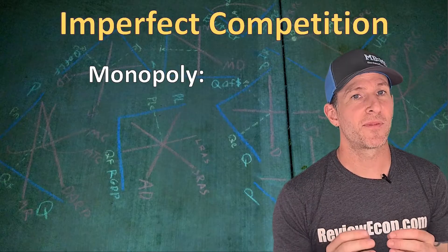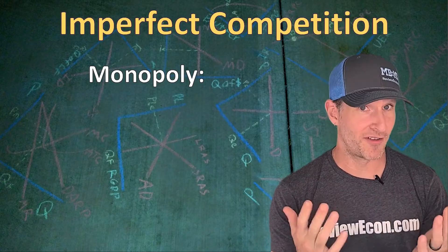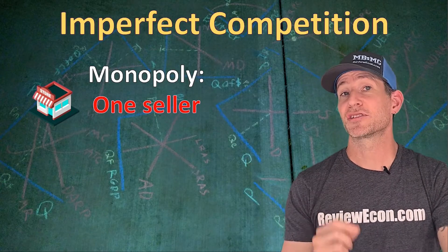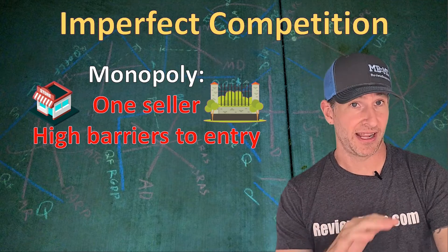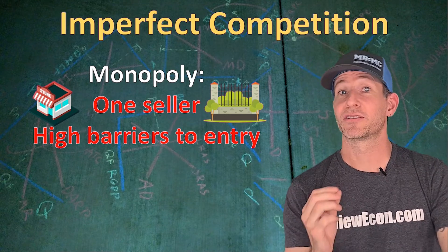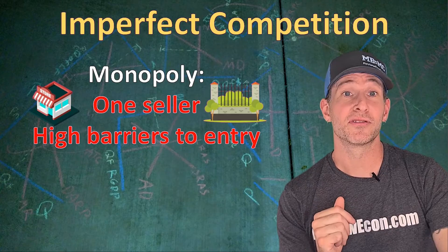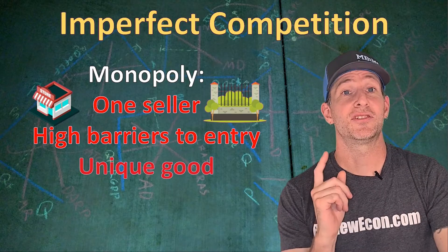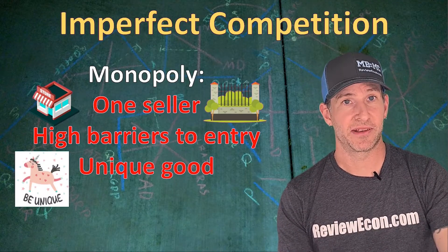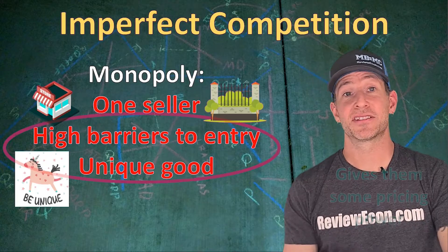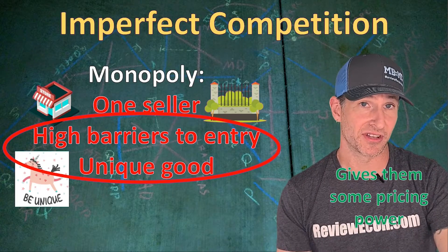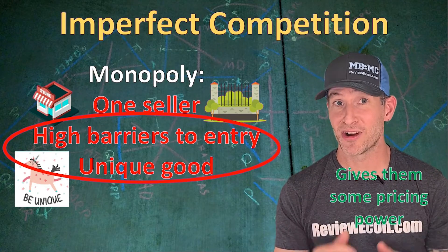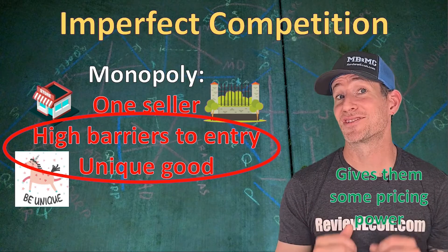The last imperfectly competitive market is a monopoly — in fact, it is the least competitive of markets. In a monopoly, just one seller dominates the market, and barriers to entry are so high that it is impossible for any firms to enter and compete. If a competitor does enter and break through those barriers, then the market is no longer a monopoly but an oligopoly instead. In a monopoly, the product is unique, meaning there are no close substitutes. It is those high barriers to entry and the uniqueness of the good that give this firm pricing power. In fact, another term for pricing power is monopoly power — and that's because monopolies have so much of it.